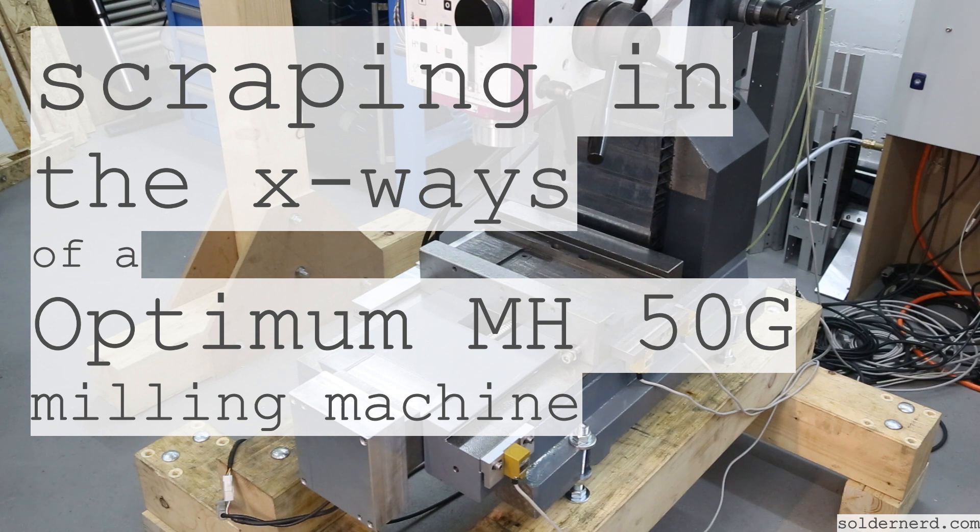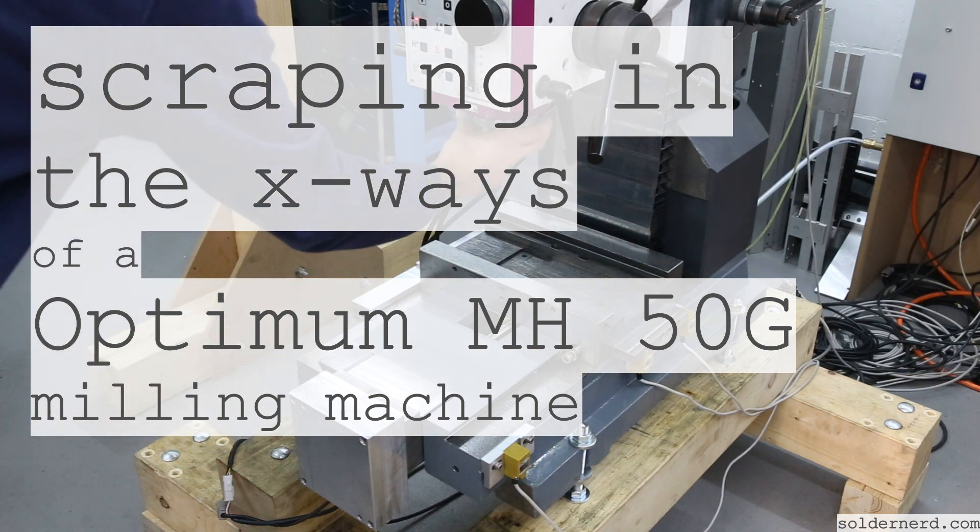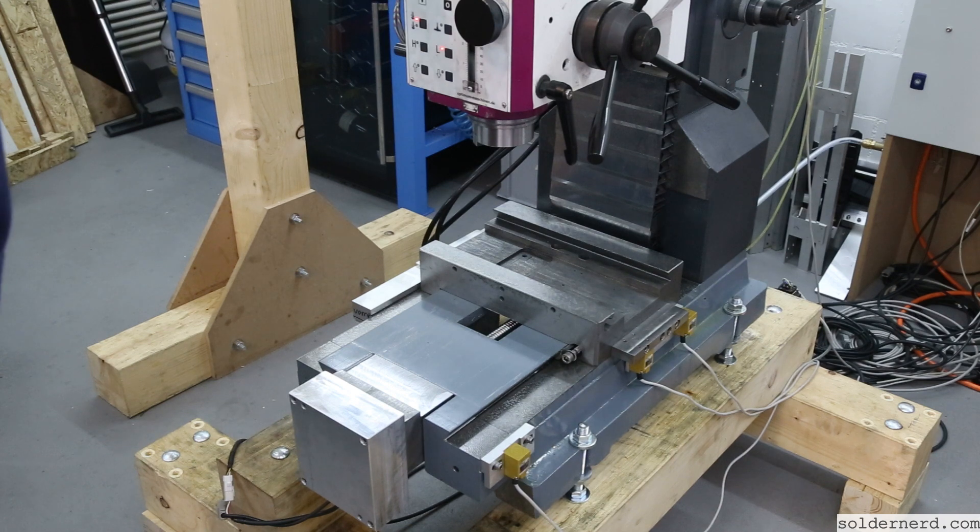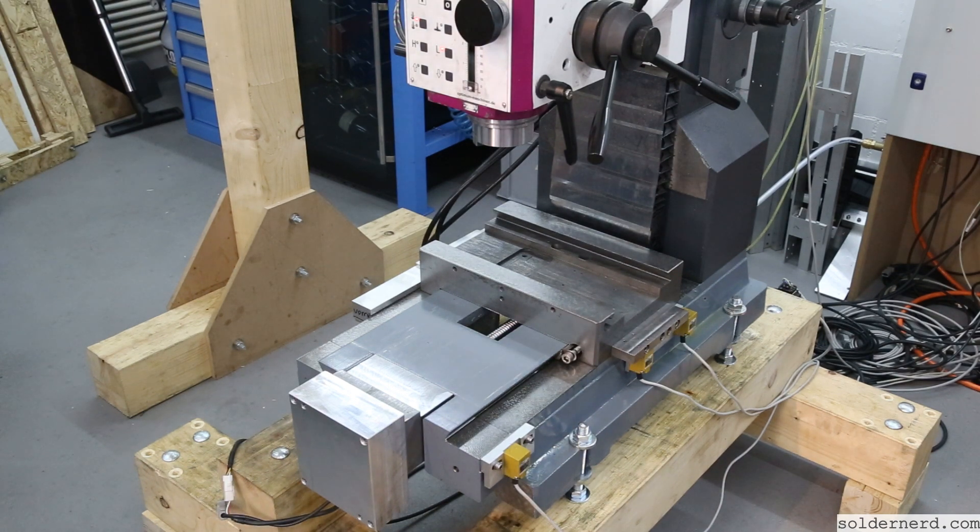It's like a 5600 kilogram class Chinese mill with a BT40 taper. Pretty solid machine but just about the heaviest you can still get down into your basement. That's essentially why I chose it over a used industrial machine.